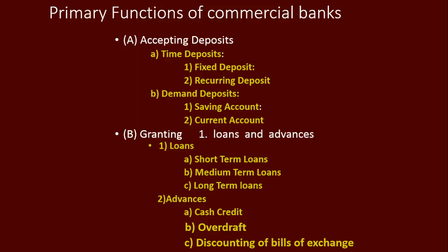That covers all the primary functions of commercial bank. To revise: the two primary functions are accepting deposits and granting loans and advances. Under accepting deposits, you have time deposits — fixed deposit and recurring deposit — and demand deposits — savings account and current account. Under granting loans and advances, loans are short-term, medium-term, and long-term, and advances include cash credit, overdraft, and discounting of bills of exchange. Thank you, students.